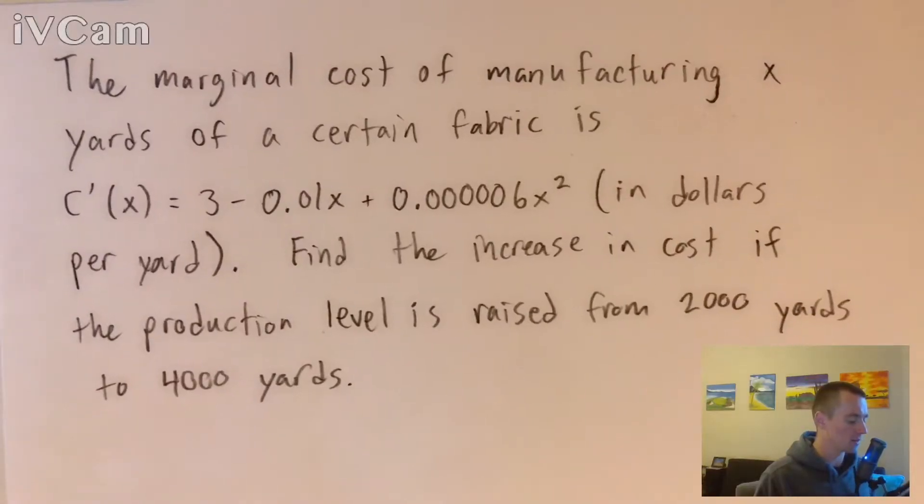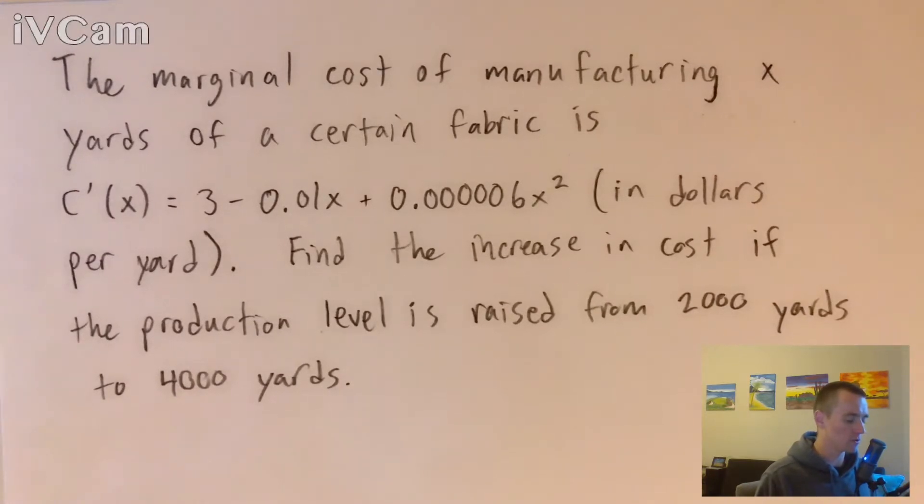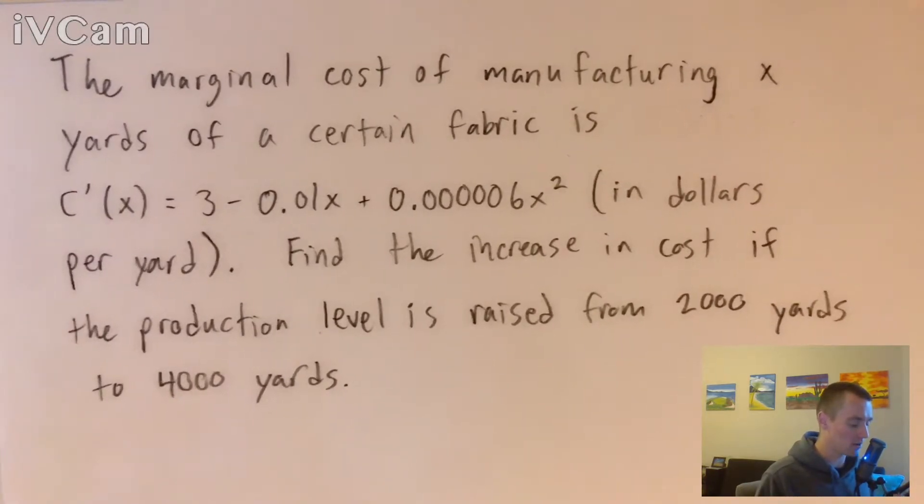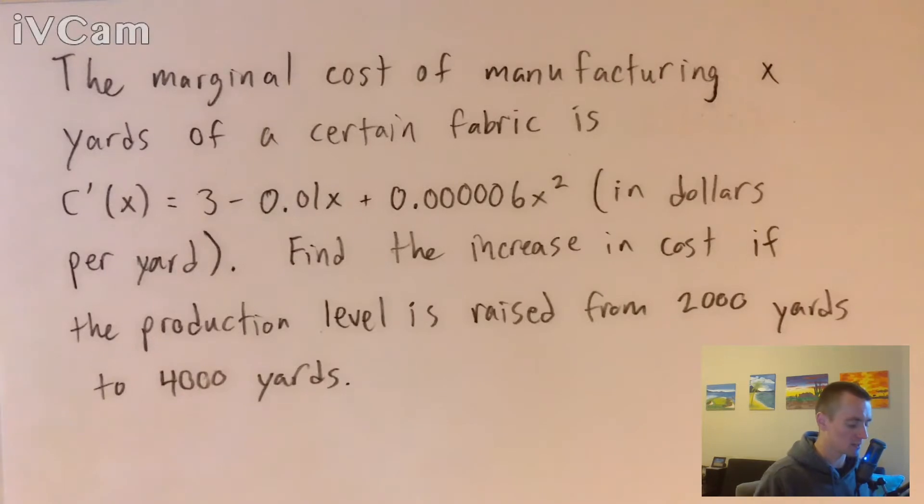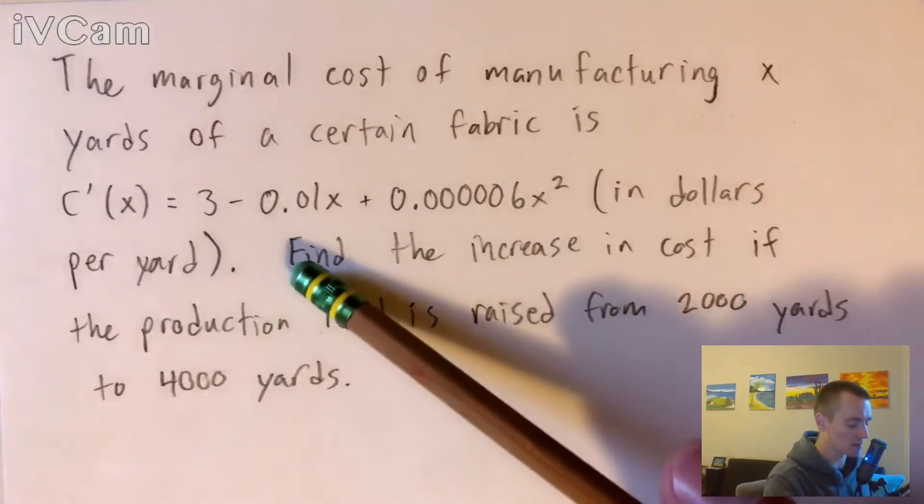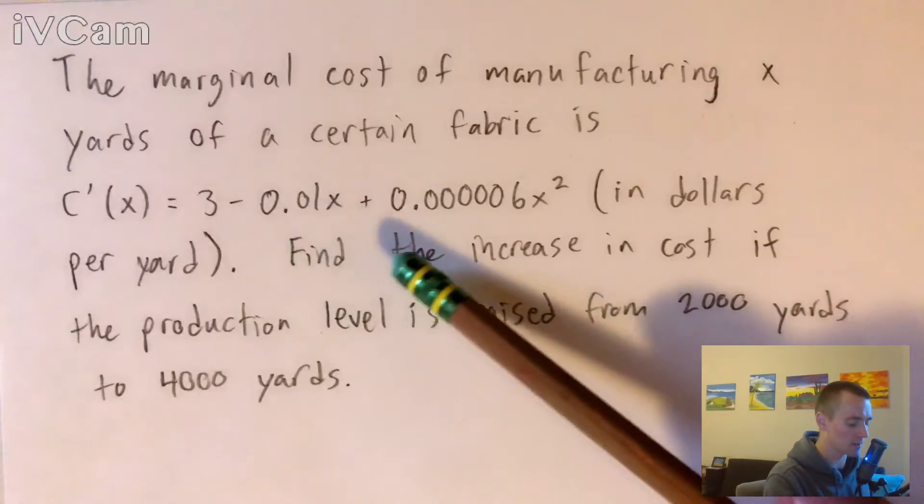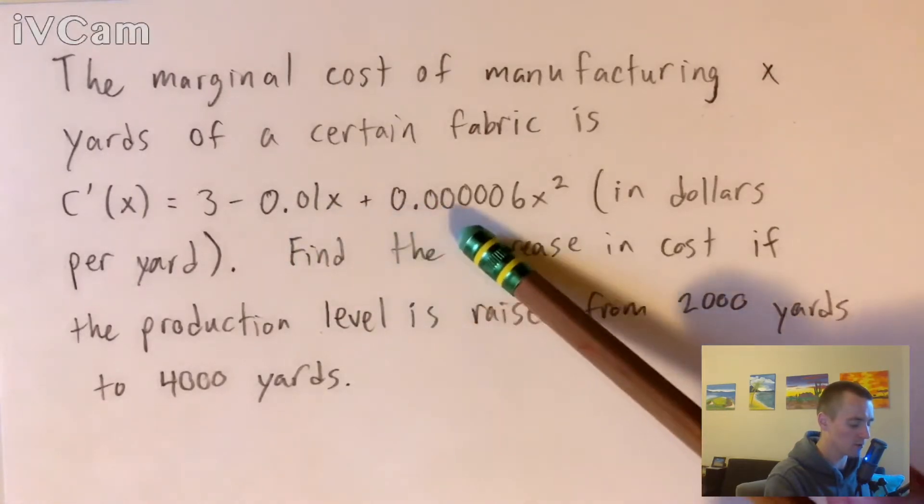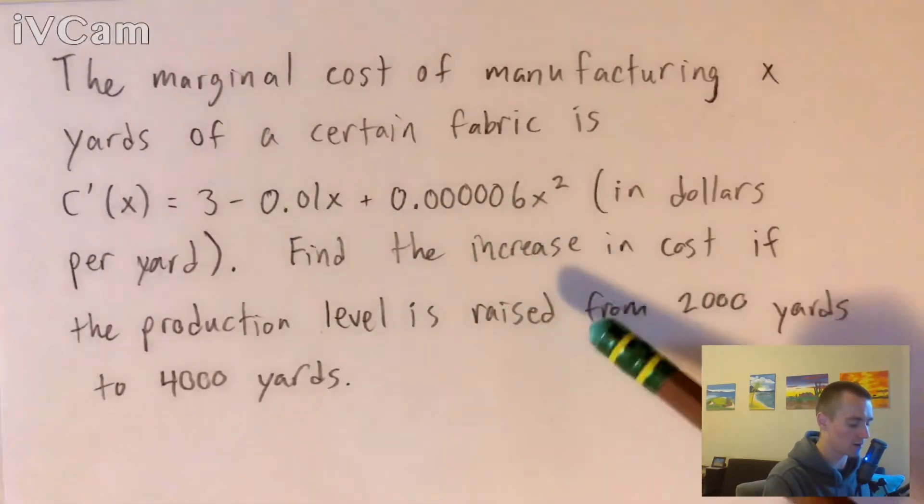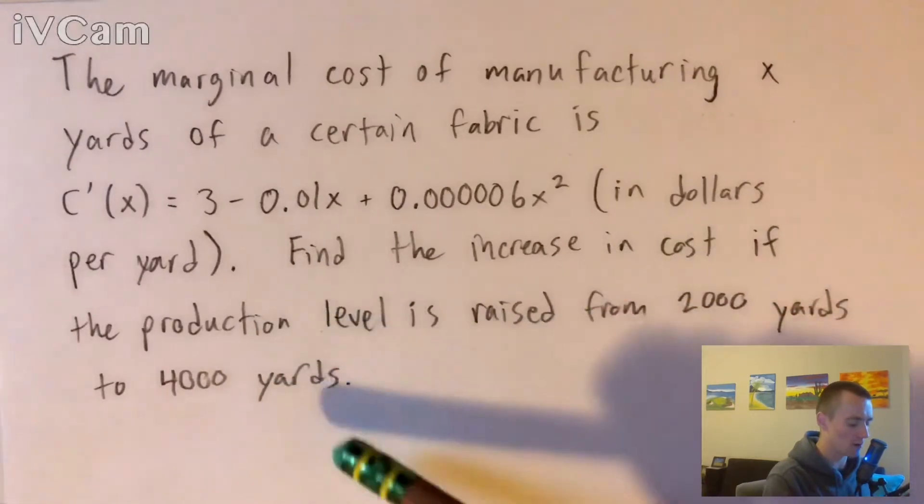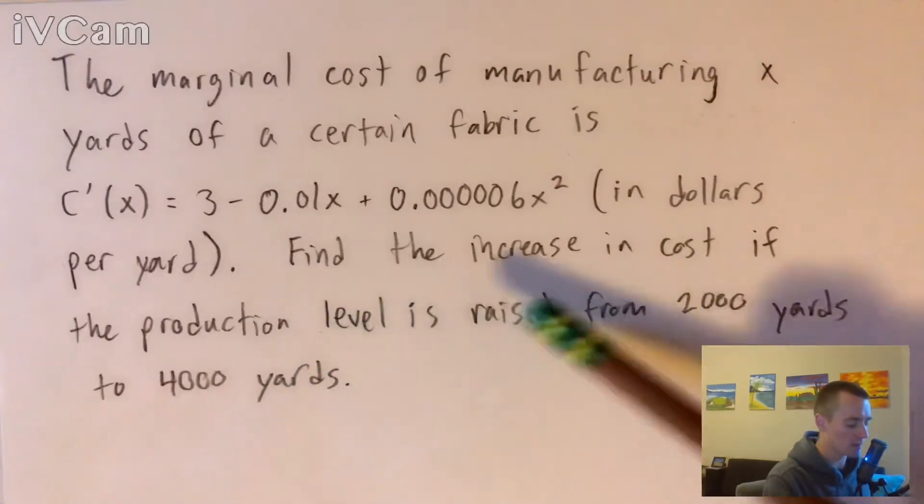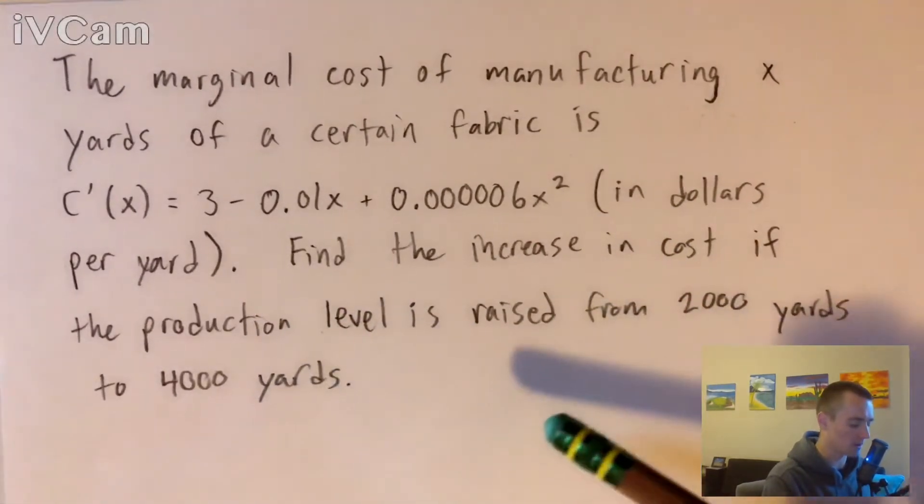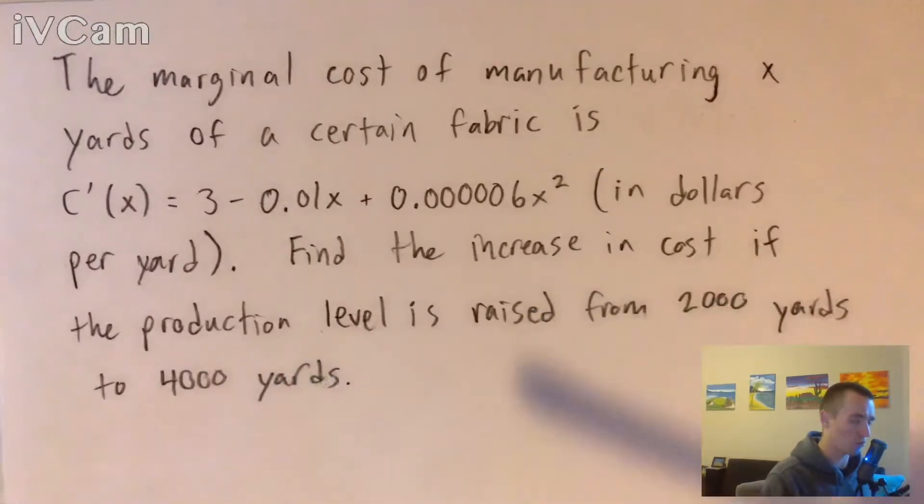Let's go ahead and get into this problem here. We have the marginal cost of manufacturing x yards of a certain fabric is C'(x) equals 3 minus 0.01x plus 0.00006x squared, and this is in dollars per yard. What we need to do is find the increase in cost if the production level is raised from 2,000 yards to 4,000 yards.